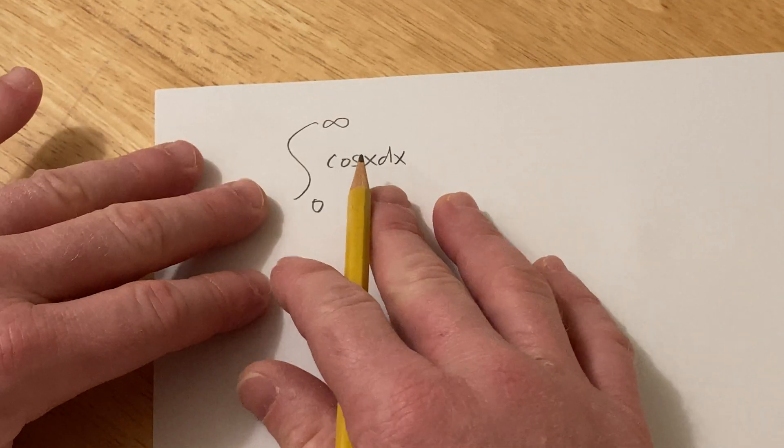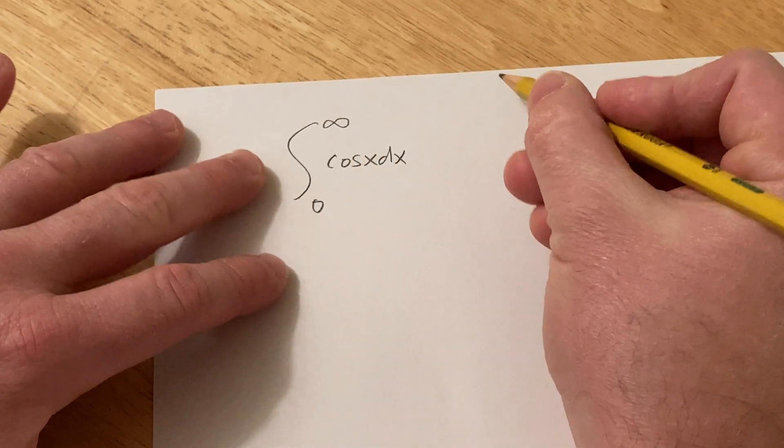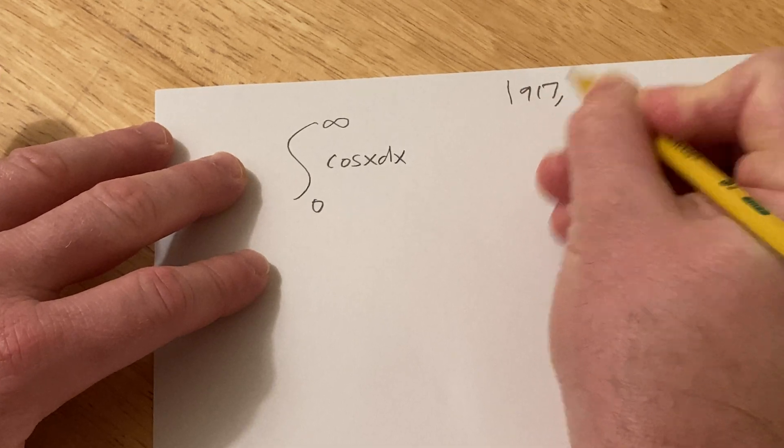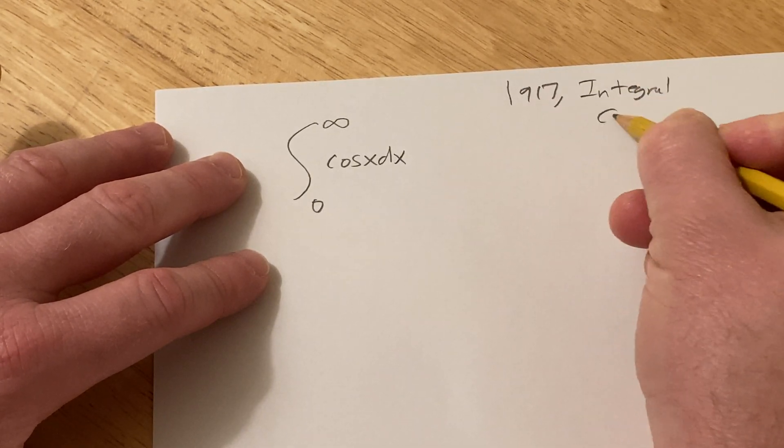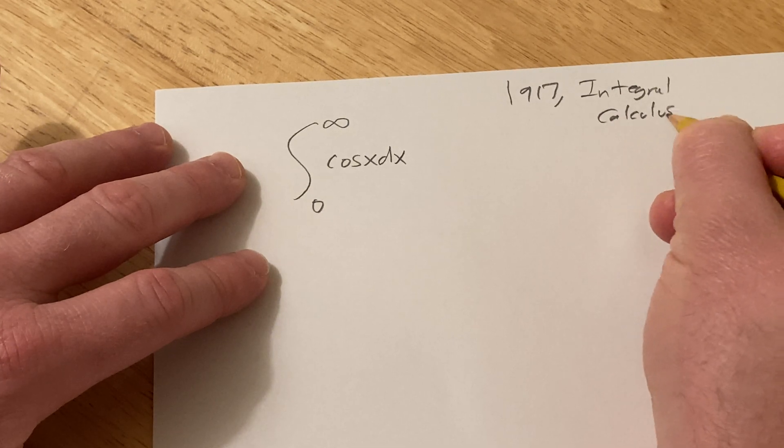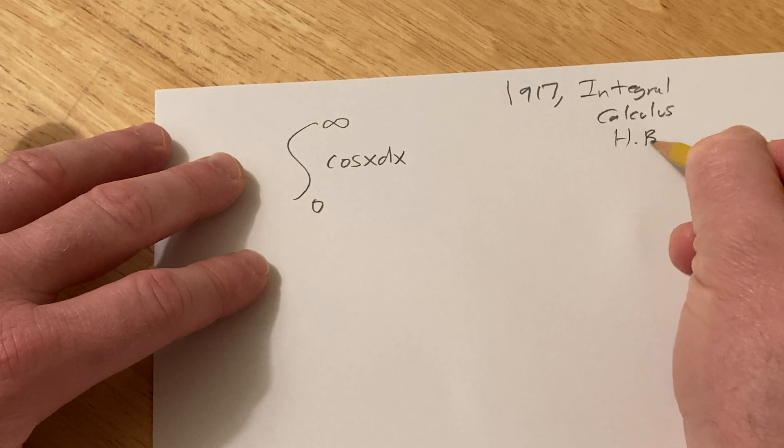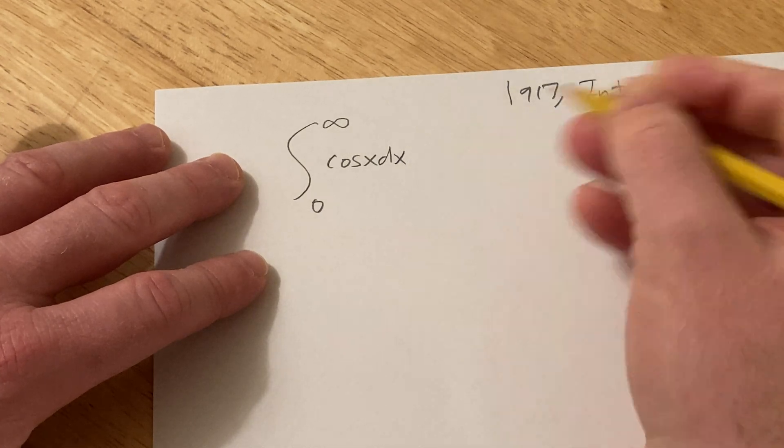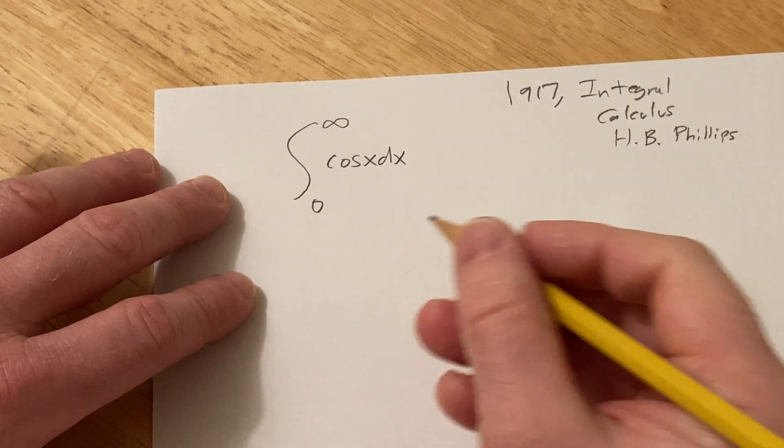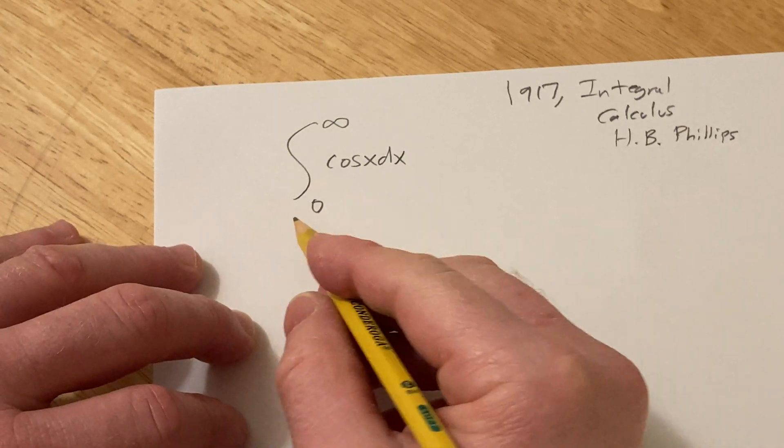Hi, in this video we're going to be working out this problem. This is from a really old book from 1917. It's called Integral Calculus, if you're curious, and it's by H.B. Phillips. And this is not a particularly difficult problem or anything. I just thought I would work it out and make a quick video to show you how to do it.